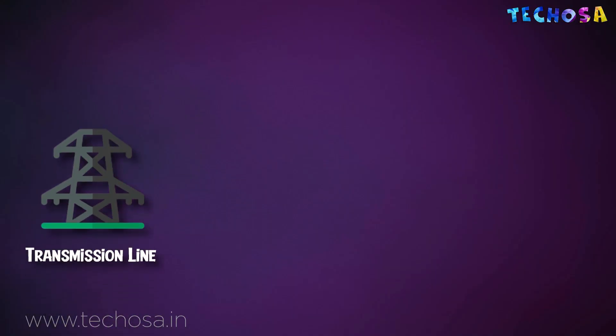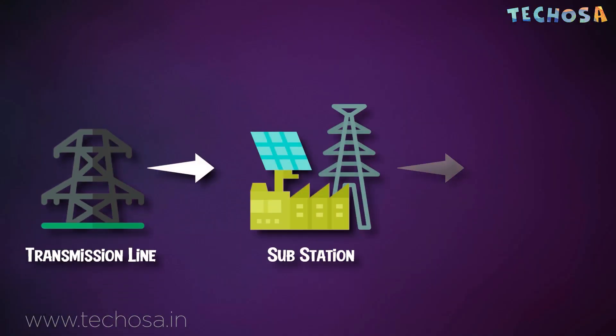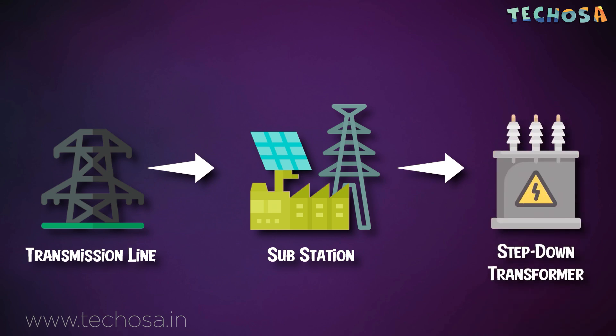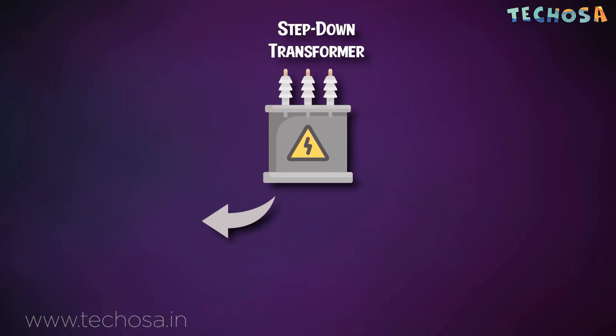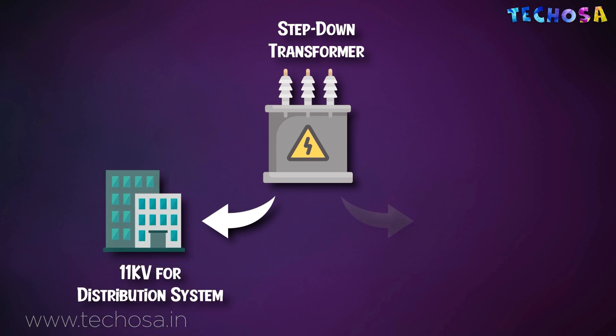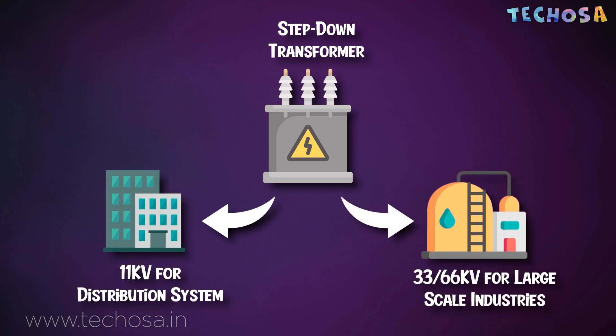Higher voltage means that less heat will be generated during transmission through the wires. From the transmission line, the electricity reaches the substation where the voltage is reduced using a step-down transformer. A step-down transformer is used to reduce voltage; as voltage decreases, current increases. The voltage is reduced in two stages: 11 kV for the distribution system that reaches our homes, and 33 or 66 kV for large-scale industries.